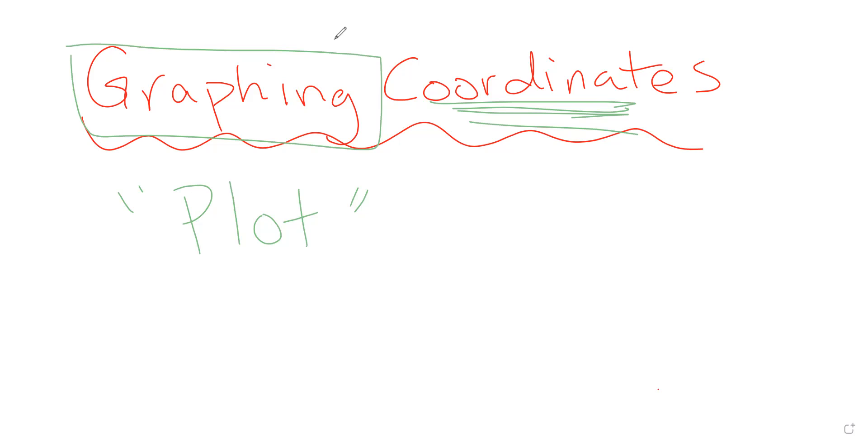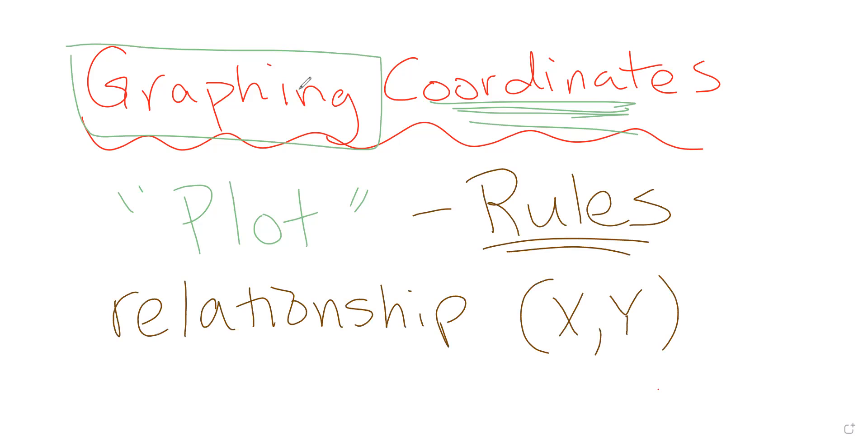Before we totally jump in, though, one thing we're going to keep in mind today is understanding the rules or maybe another term we could think about is the relationship that is happening between our ordered pairs or the concept of what is happening between X and Y. There is a relationship that occurs between them. And that's what we've talked about in the past couple of videos, where you think about the distance that occurs from one point to the next.